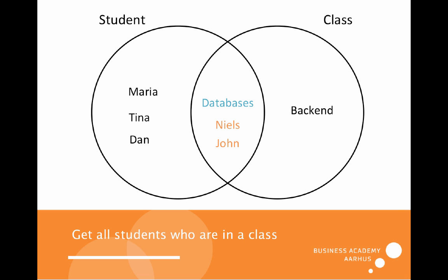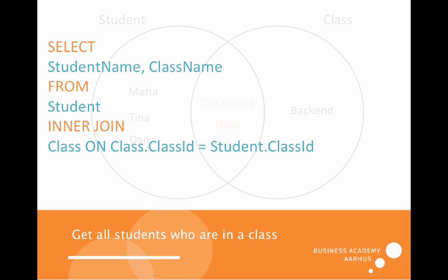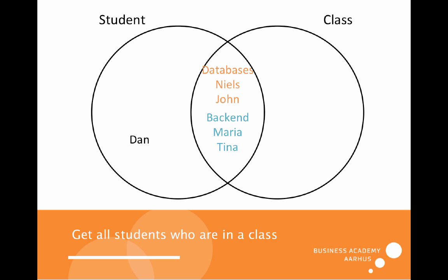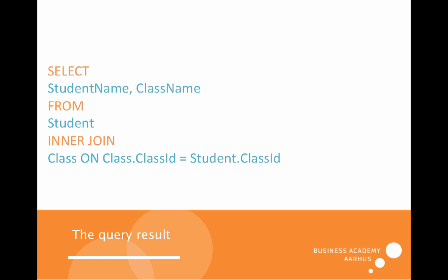Now let's look at how to get all students that are in any class, whether Databases or Backend. This is simpler — we just omit the WHERE clause, because now we are interested in anyone who is in a class, meaning Backend or Databases. In this case the result will be Nils, John, Maria, and Tina. Dan is outside because there is no class with class ID 4, so Dan has no common ground and is excluded.